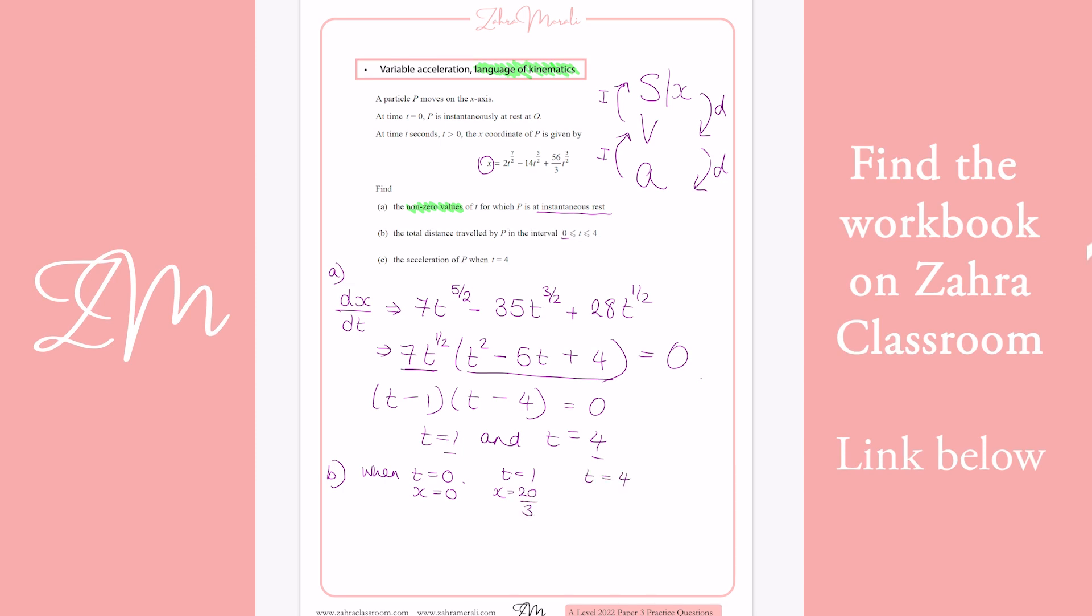And when t equals 4, so if I stick 4 in, I'm going to get 2 times 4 to the power of 7/2, minus 14 times 4 to the power of 5/2. Put those each bits into brackets as you do it. Use your fraction buttons. They're your friends here. It'll make sure you don't make any mistakes in the exam, especially if they're like really fiddly numbers. And that gives us minus 128/3.